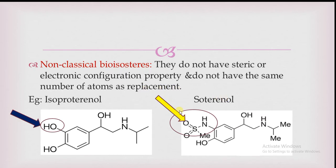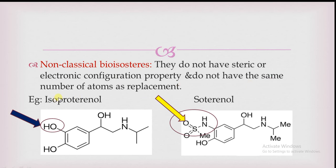Non-classical bioisosteres do not have the same steric or electronic configuration properties and do not have the same number of atoms as the replacement. They do not have the same number of electrons. In the case of classical bioisosteres, one atom is replaced with another atom — for example, one monovalent atom is replaced with another monovalent atom. But in non-classical bioisosteres, we are replacing with another molecule or component, which does not have similarity in steric factor or electronic configuration.